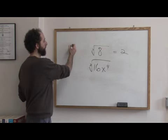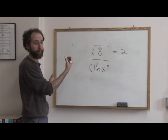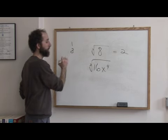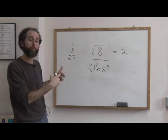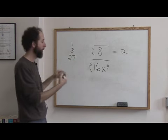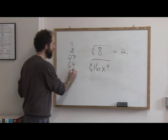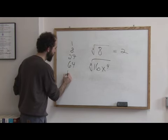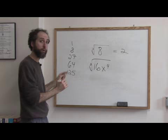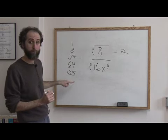The perfect cubes are, one cubed is one. That doesn't help much. Two cubed is eight. Three cubed is 27. What I mean by that is three times three times three is 27. That's three cubed. Four cubed is 64. That's four times four times four. One more. Five cubed is 125. And you can make a whole list. That's the only numbers we're interested in.